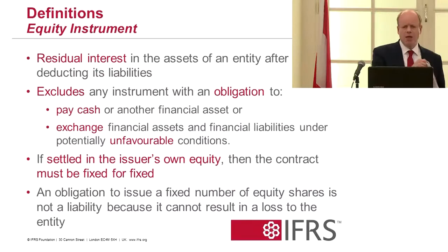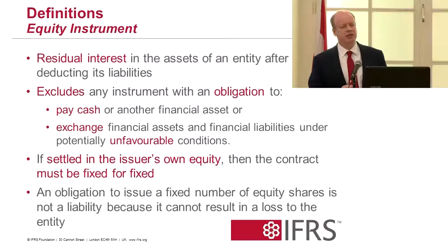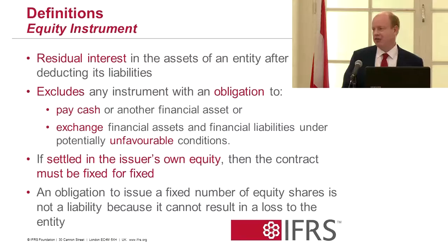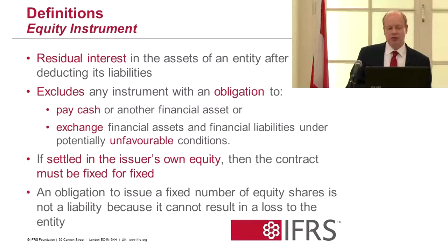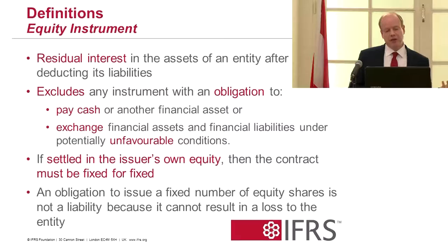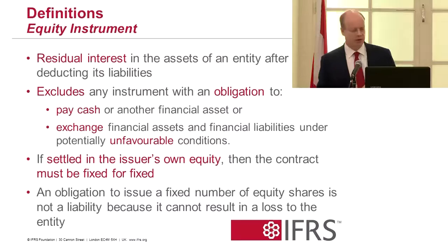Under IAS 32, equity is the residual interest in the assets of an entity after deducting all its liabilities. It excludes any instrument where there is an obligation to pay cash or exchange financial assets under potentially unfavorable conditions. If the instrument must be settled in the issuer's own equity, the contract must be 'fixed for fixed' — a fixed number of equities exchanged for a fixed amount of cash. An obligation to issue a fixed number of equity shares is not a liability because it cannot result in a loss to the entity.